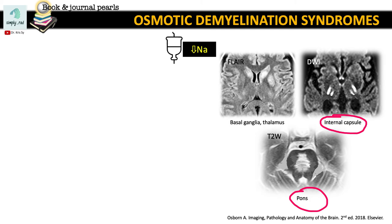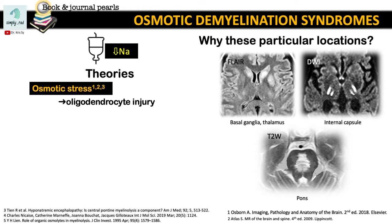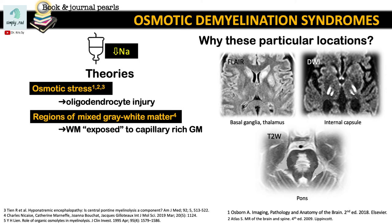But what about the basal ganglia and thalamus? Aren't they supposed to be comprised of gray matter? How does hyponatremia affect these structures? Hyponatremia can cause injury by several mechanisms. The first is osmotic stress resulting in oligodendrocyte injury, which can explain the loss of myelin. But why the pons and the deep gray matter nuclei and deep white matter? While the definite reason is not yet known, a theory is that the pons and the basal ganglia are areas where there is intermixing of the gray and white matter, so the white matter is exposed to the osmolality stresses within the capillary-rich gray matter.